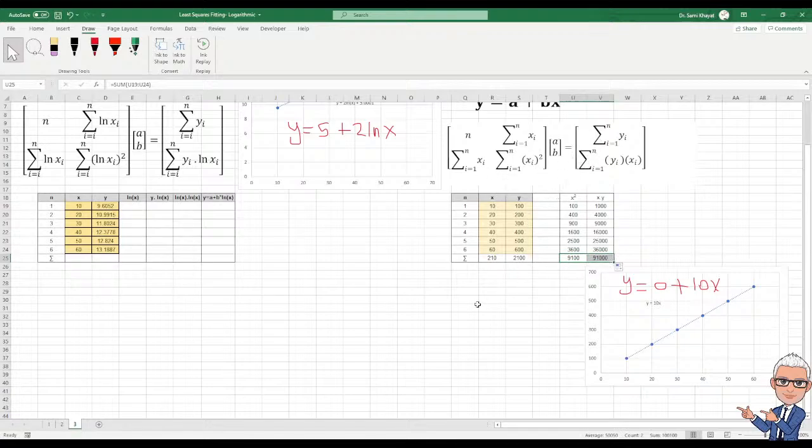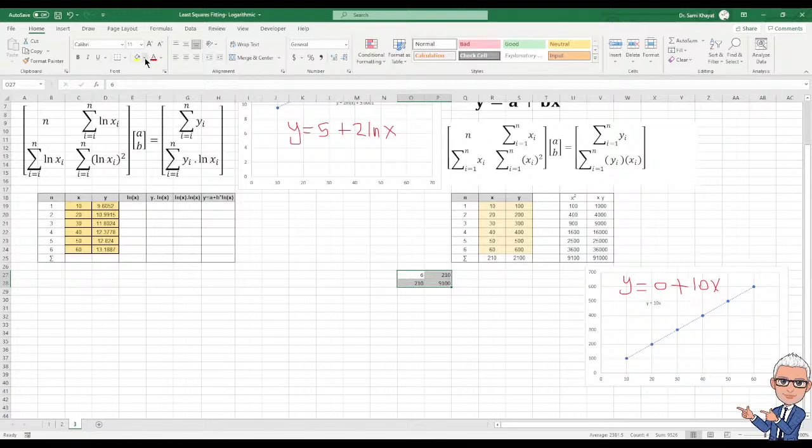Now let's solve this matrix. What we have here. First we have n, we have six points. How much summation x? We have this one, 210. And this one is summation x square, which is this one, equals to 9100. Let's give them some color.